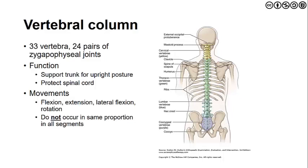Movements we see include flexion, extension, lateral flexion, and rotation, but not all occur in the same proportion in all segments. For example, in the cervical spine we see lateral flexion or side bend coupled with rotation, but the exact ratio is unclear. It changes whether we're in the craniovertebral region or the lower cervical spine as we begin to transition into the thoracic spine.